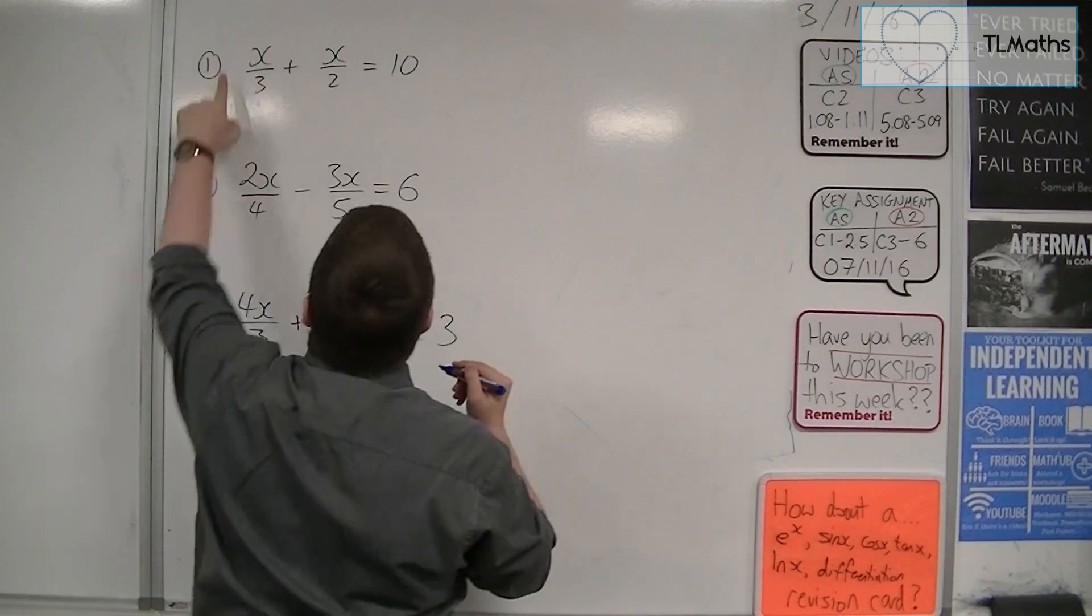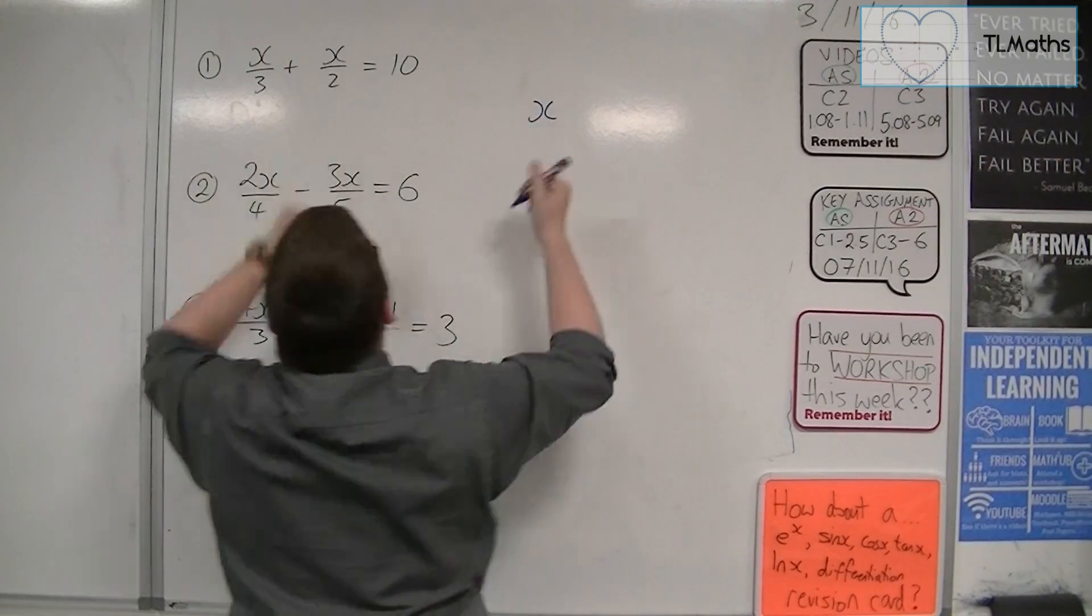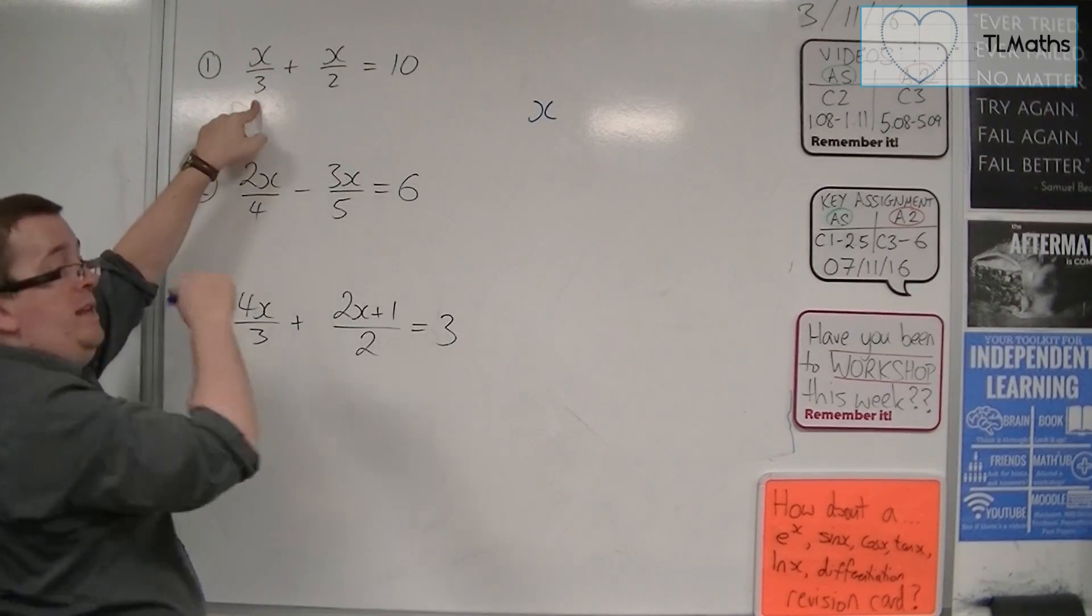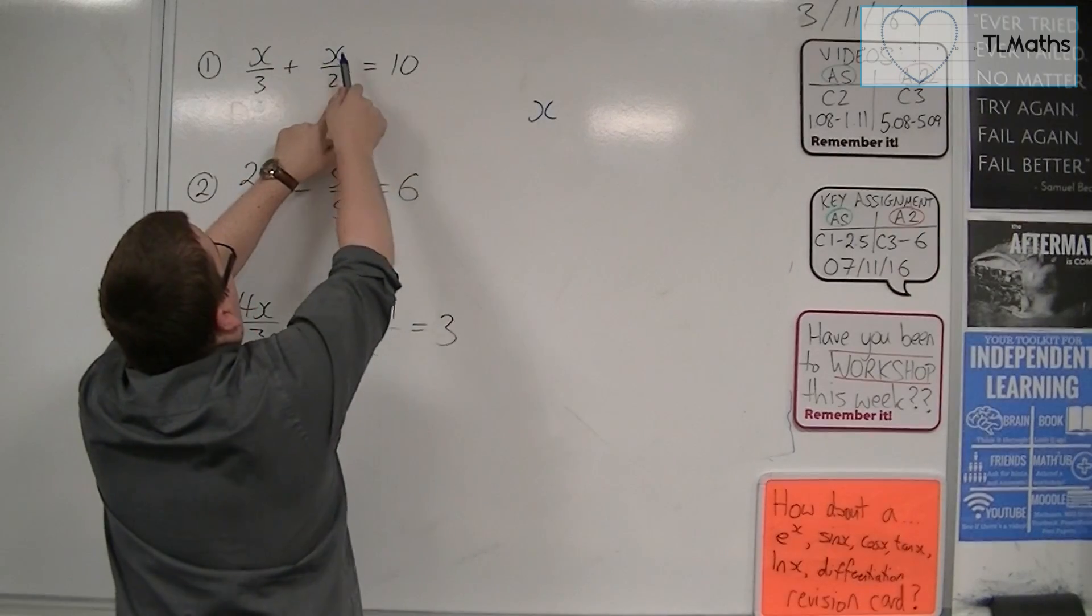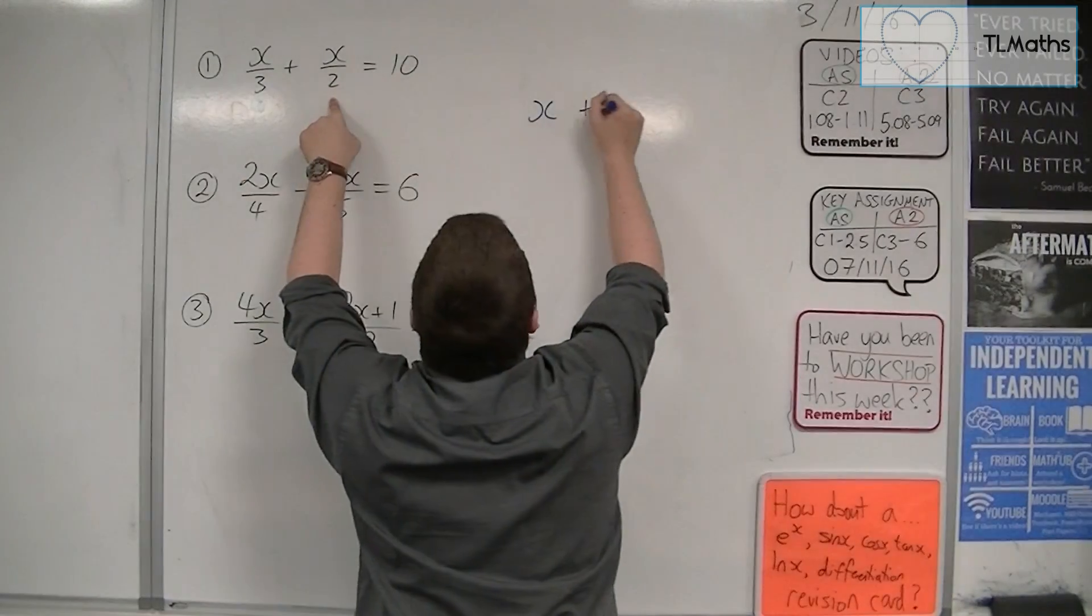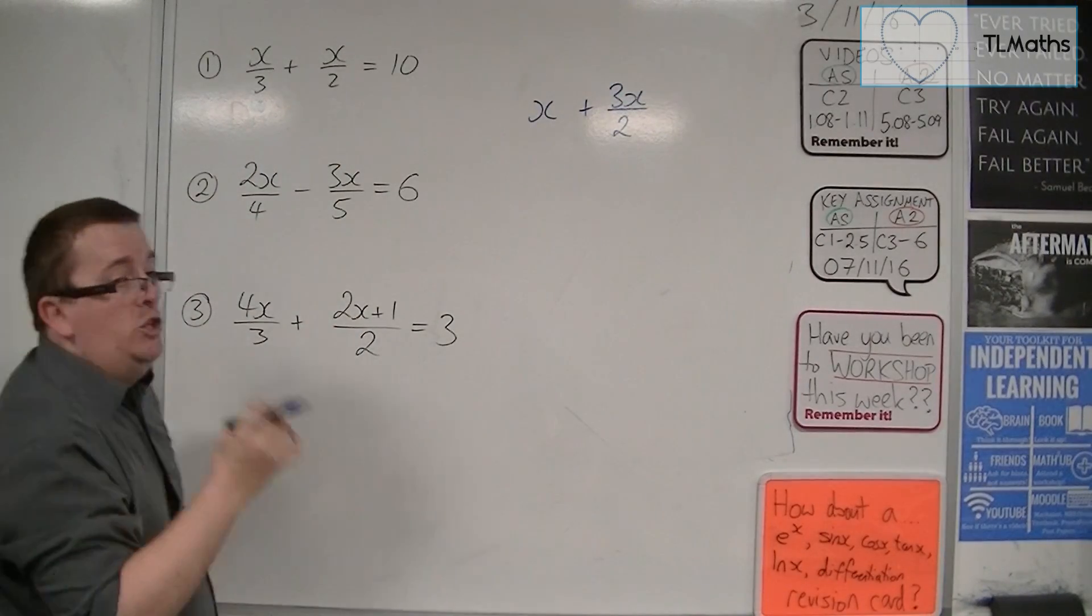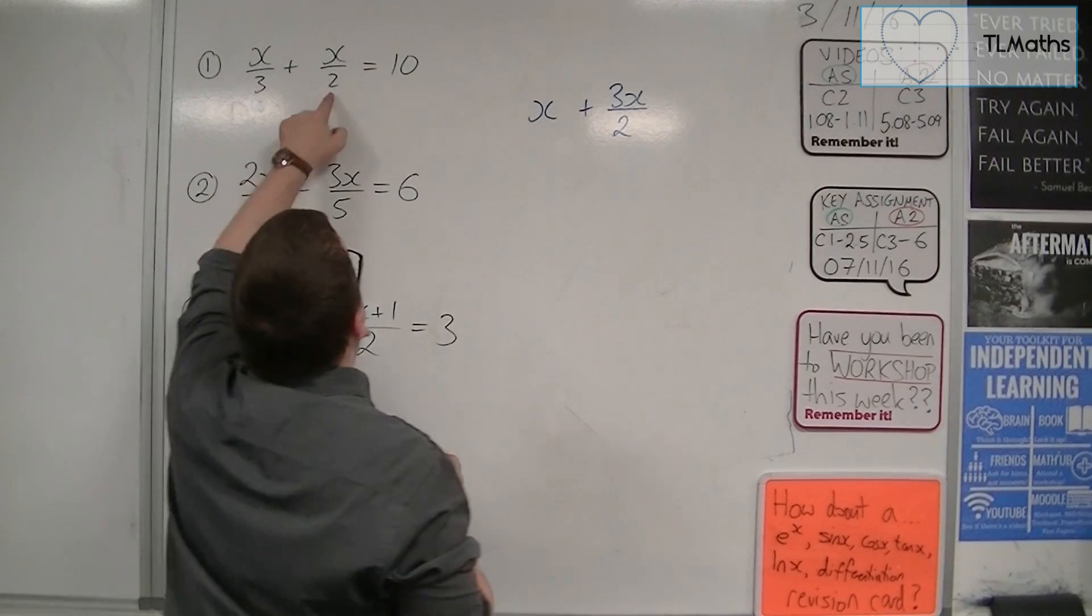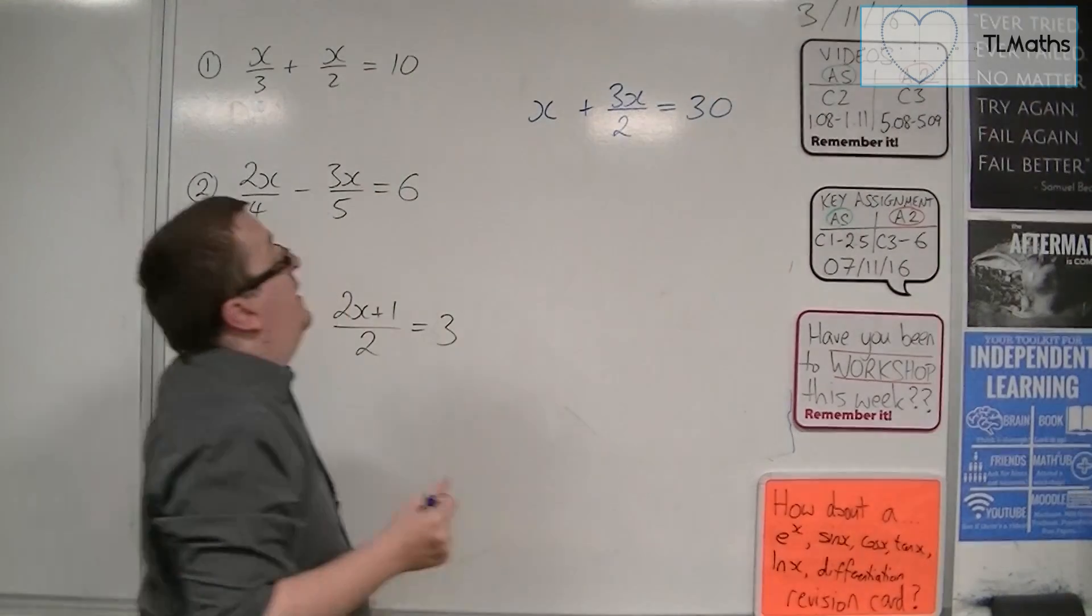So the x over 3 gets multiplied by 3, and I get left with x. So 3 lots of x over 3, the 3's cancel. This term, 3 lots of x over 2, becomes 3x over 2. Make sure that you're only multiplying the numerator here. And then 3 lots of the 10, so that's 30.